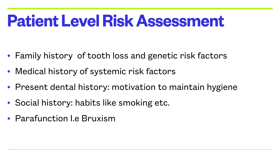At the patient level, we can look for family history of tooth loss — asking how the dentition was in parents or grandparents and when they first wore a denture. This guides a proper assessment of risk. We can also review medical history for systemic risk factors such as hypertension, diabetes, or any immunodeficiency conditions that could pose a threat or increased risk towards periodontitis.